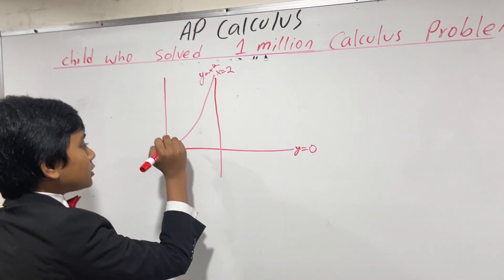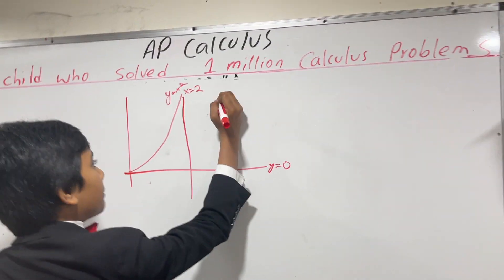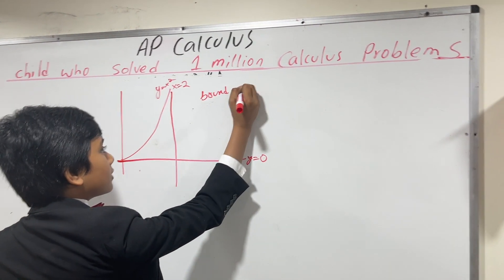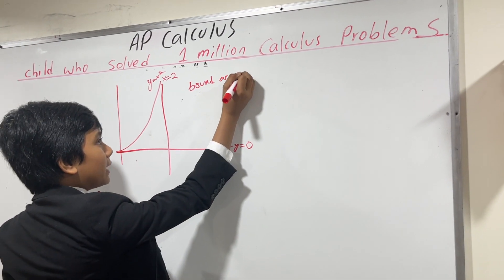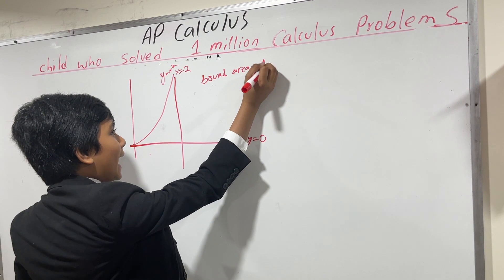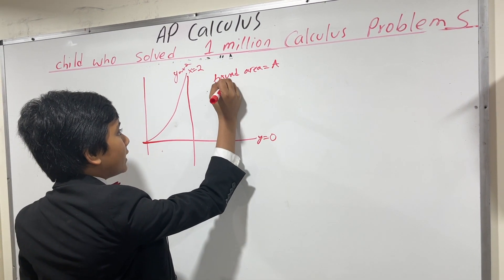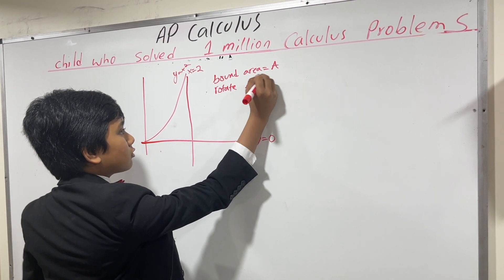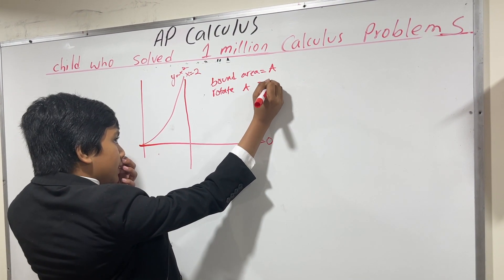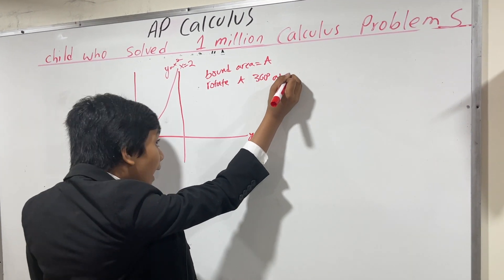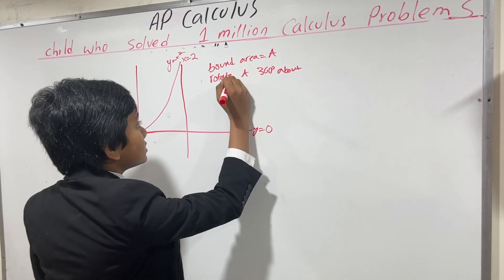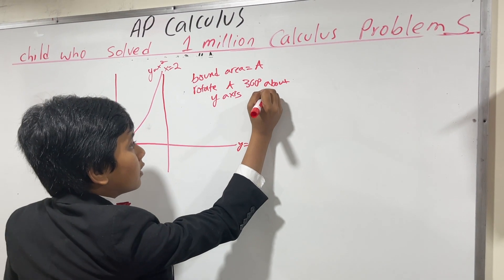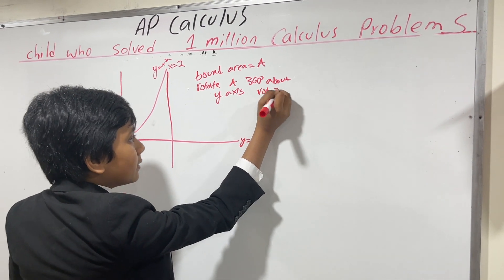And then we have the line y equals 0, but that's just the x-axis. Now, the question is: let's call this bound area A. Let's rotate A about 360 degrees about the Y-axis. What is the volume of the resulting shape?